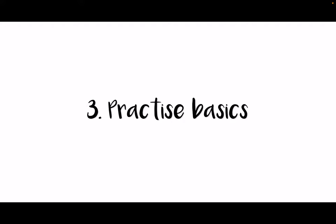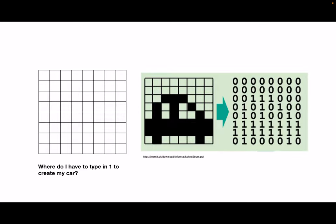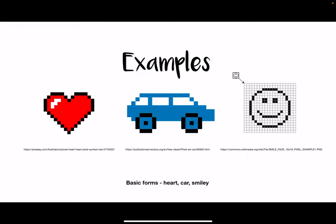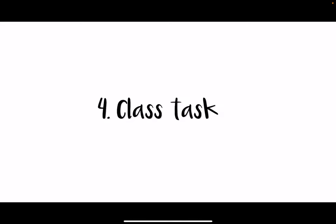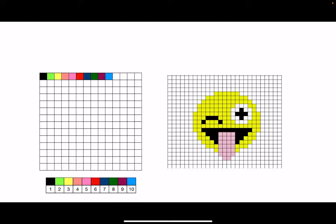I then ask students to practice the basics. I created a grid here on the left-hand side and have a picture of an example — like a car — and say, why don't you try to create this using zeros and ones? They type in whatever they think, replicating the car using zeros and ones. I show lots of examples: basic forms like a heart, car, or smiley face, or even more complex examples you can find on the web. I then introduce the class task, which is a simple emoji. Students experiment with which color goes in which square, correcting themselves as they go — it's a great activity for them to explore and try out.